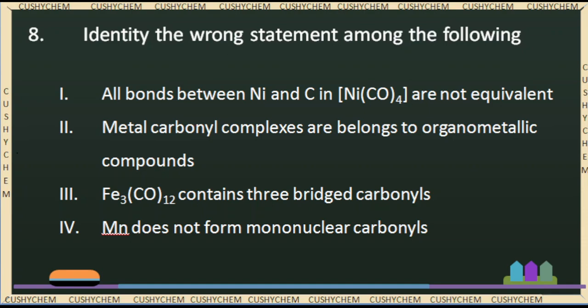Next question: identify the wrong statement among the following. The first statement is that all bonds between nickel and carbon in Ni(CO)4 are equivalent. Metal carbonyl complexes belong to organometallic compounds. Fe3(CO)12 contains 3 bridging carbonyls. Mn does not form mononuclear carbonyls. Now, all bonds between nickel and carbon in Ni(CO)4 are equivalent — actually they are equivalent. Metal carbonyl complexes belong to organometallic compounds — this is the definition: molecules having at least one carbon-to-metal direct bond. Even Grignard reagent RMgX is an organometallic compound. So metal carbonyls are organometallic compounds.